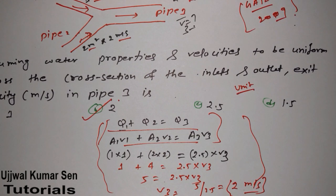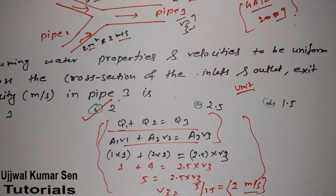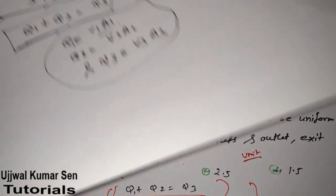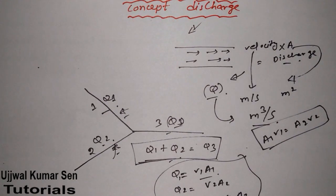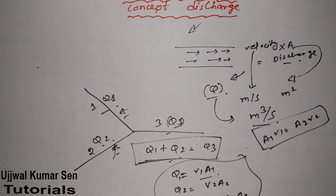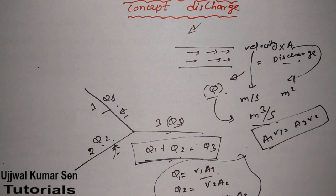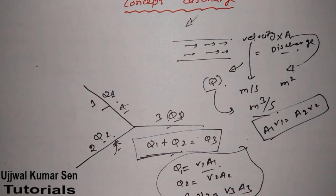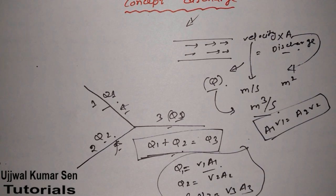To recap: the key concept is that discharge at inlets equals discharge at outlet — Q1 plus Q2 equals Q3. The discharge formula is Q = V×A, and its unit is meter cube per second. Also remember the continuity equation A1×V1 = A2×V2, valid only for incompressible fluids. I hope you understand the concept of discharge and can solve this type of problem in your upcoming competitive examination. Thanks for watching — see you soon in my next video.